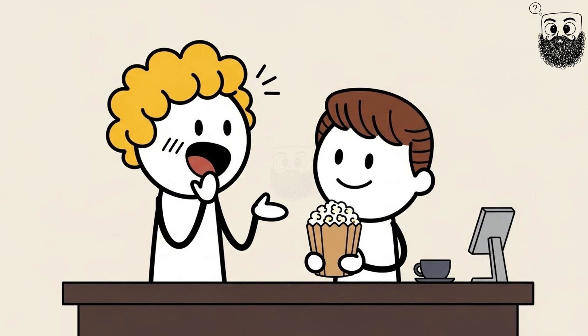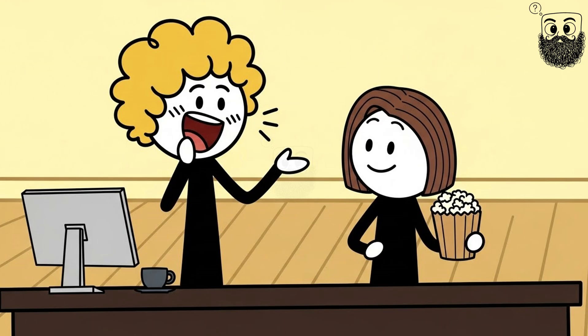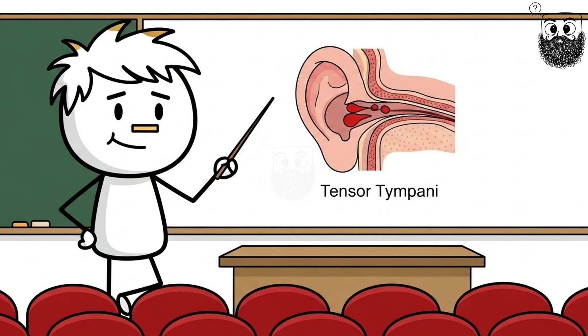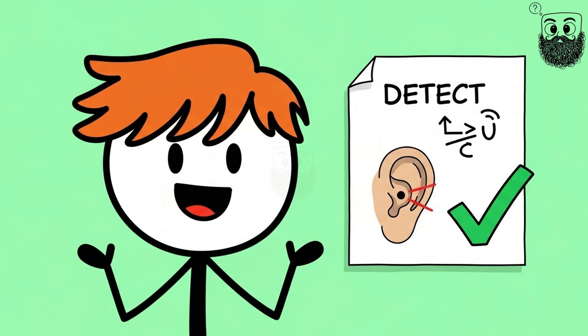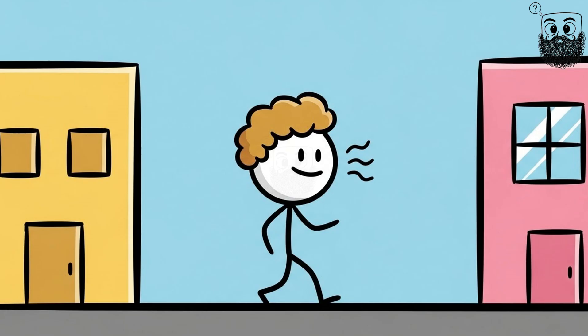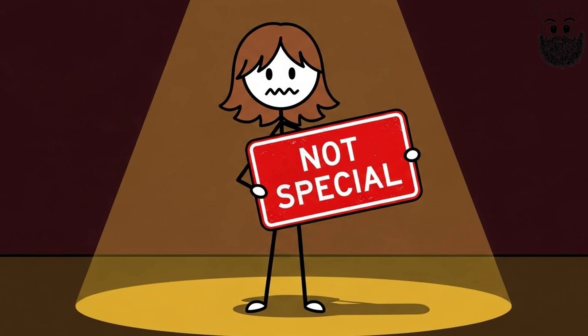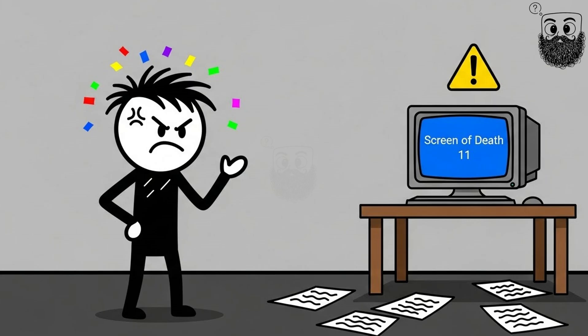Most people who discover they can do this assume everyone else can too. Then they mention it to friends and get stared at like they just claimed they can taste colors. Scientists understand the muscle perfectly. They just can't explain why your brain decided to give you manual control over it. It's not broken, so there's nothing to fix. You're just walking around with a built-in white noise machine that serves absolutely no purpose. You're not special. You're just glitched.